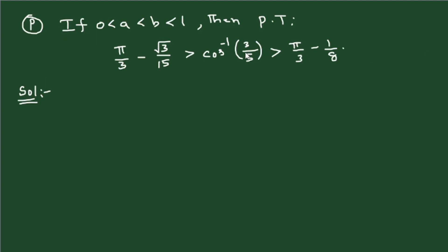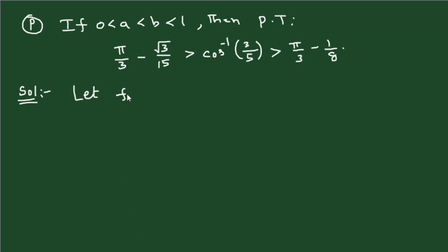Now we will see a problem. We are given that 0 < a < b < 1, and both are positive. Then prove that π/3 minus 3√3/15 is greater than cos⁻¹(3/5), which is greater than π/3 minus 1/8. We are not given the function directly here; in between the inequalities we have cos⁻¹(3/5), so we take the function as f(x) = cos⁻¹(x).